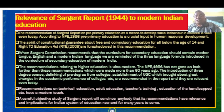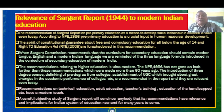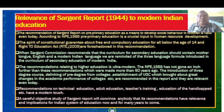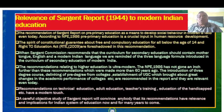The recommendations relating to higher education in the Sargent Report are ultra-modern. The NPE 1986 has not gone an inch further than these recommendations, which were made more than 60 years ago. The introduction of three-year degree courses, delinking of pre-degree from colleges, and the establishment of the UGC — which brought about great changes in the academic performance of colleges — are all recommended in this report. Recommendations on technical education, adult education, teacher training, and education of the handicapped also have a modern touch.